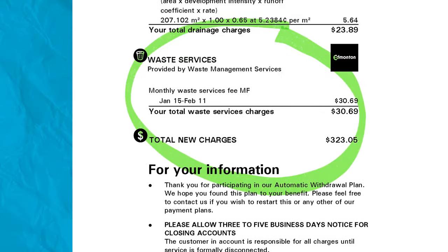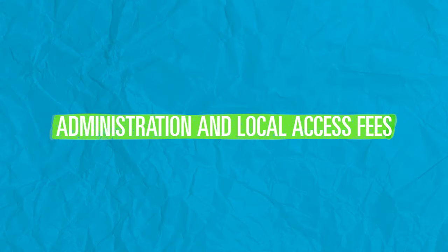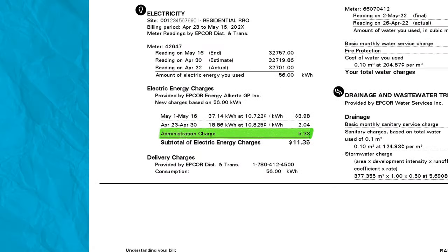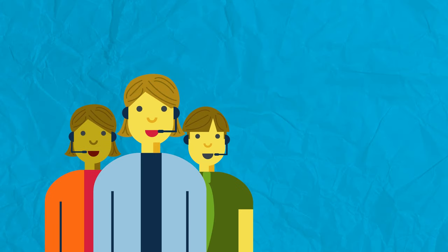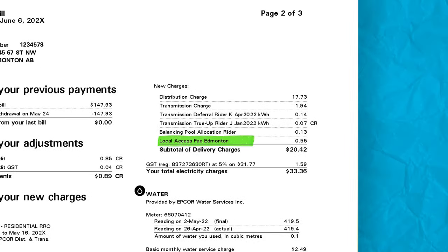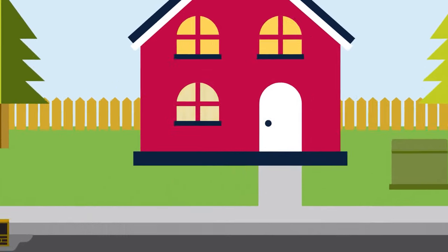You will also see charges for waste services, as EPCOR bills on behalf of the City of Edmonton. Lastly, your bill will also include non-energy-related fees listed as administration service charges, which cover the billing process, access to EPCOR customer care agents six days a week, access to My Account — EPCOR's 24/7 online account management tool — and local access fees charged on behalf of the City of Edmonton to cover using municipal land to get power to your home.